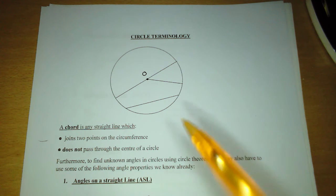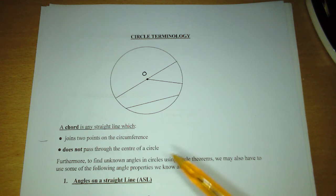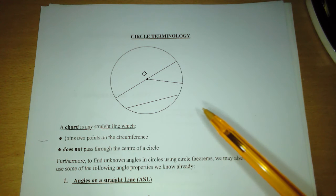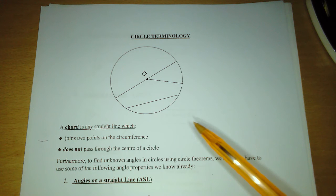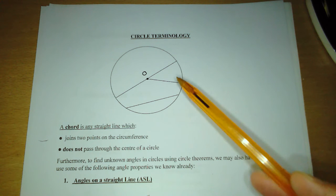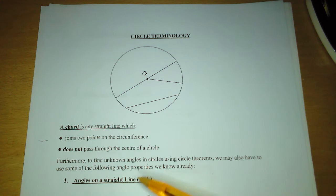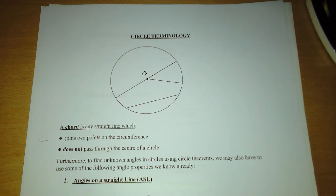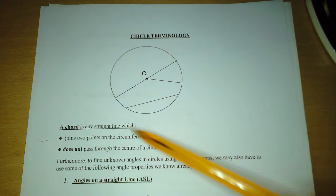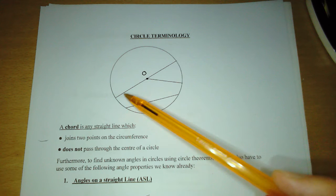We're going to start our new topic which is called circle theorems. But just before we get into circle theorems, we need to remind ourselves about circle terminology and some basic angle rules, because these will all play an important part in this topic. So first of all, circle terminology — when you see a circle and you have a line in it.